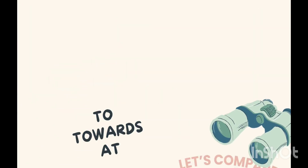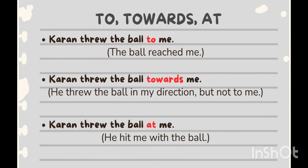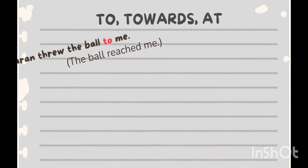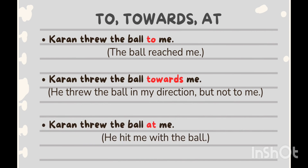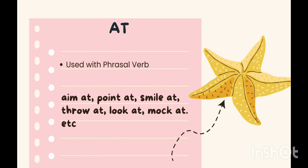'Karan threw the ball to me' — meaning the ball reached me. 'Karan threw the ball towards me' — this means he threw the ball in my direction but not to me. Whereas 'Karan threw the ball at me' means he hit me with the ball. Note that 'at' is also used in the following phrasal verbs: aim at, point at, smile at, throw at, look at, mock at, etc.